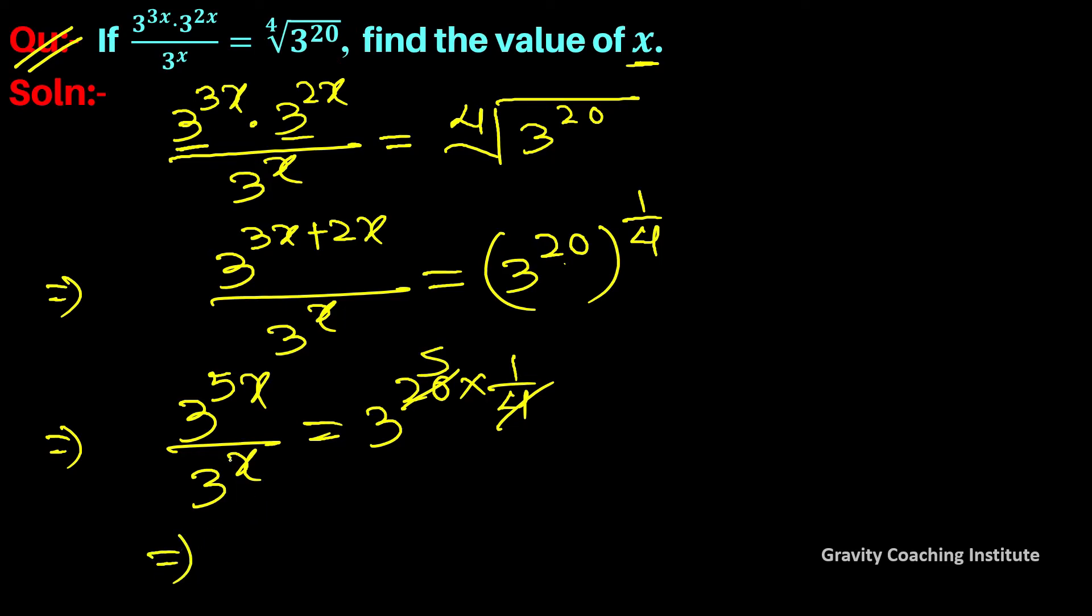Since the bases are the same when dividing, we subtract the powers: 3 to the power 5x minus x, which implies that 3 to the power 4x equal to 3 to the power 5.